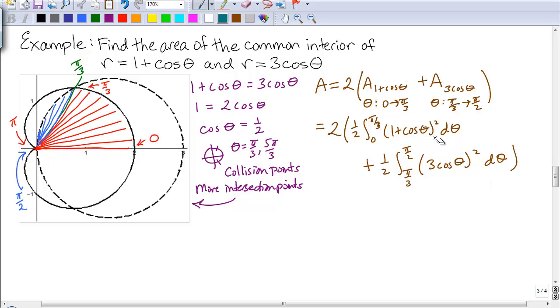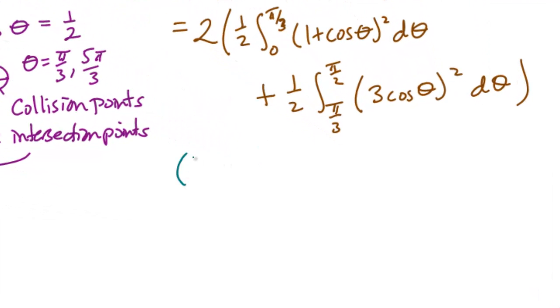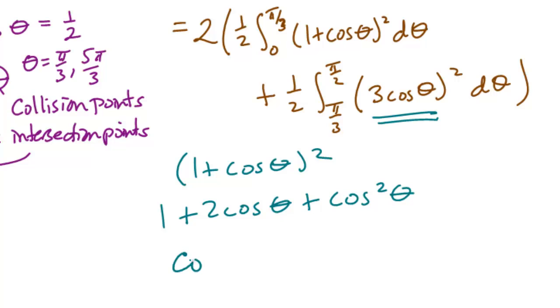So the 2 and the 1 halves will cancel out. Note that we have 1 plus cosine theta squared. That'll become 1 plus 2 cosine theta plus cosine squared theta. You will also have a cosine squared theta for the second integral. These will need the half angle formula that cosine squared theta equals 1 half times a quantity, 1 plus cosine 2 theta. See if you can work this integral out on your own.